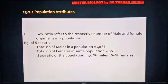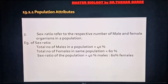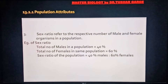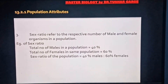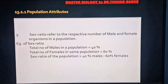Third factor is sex ratio. Sex ratio is the respective number of male and female organisms in a population. For instance, if the males in a population constitute 40%, then the rest 60% would be females — so it has a sex ratio of 40% male to 60% female. A population is said to be stable when the male and female sex ratio is approximately equal.